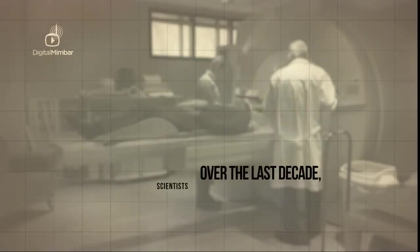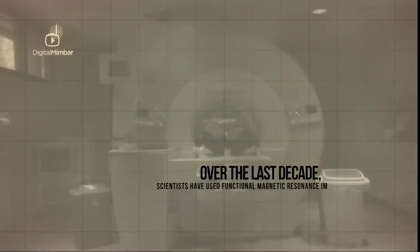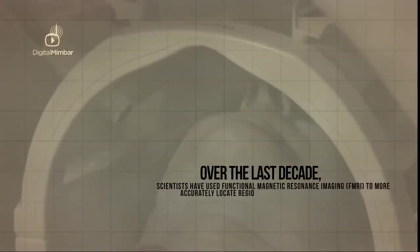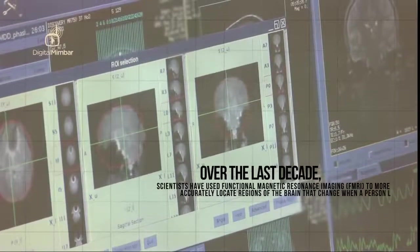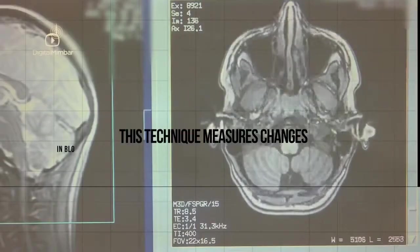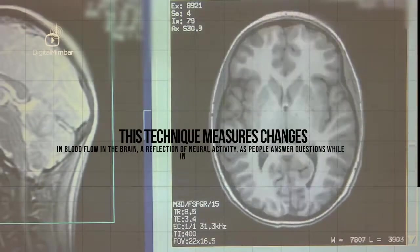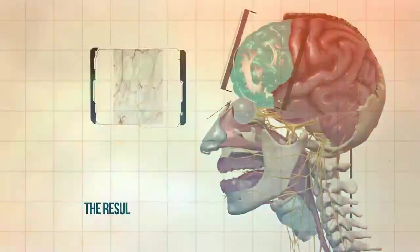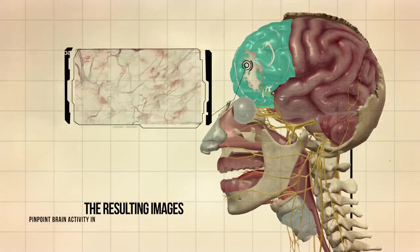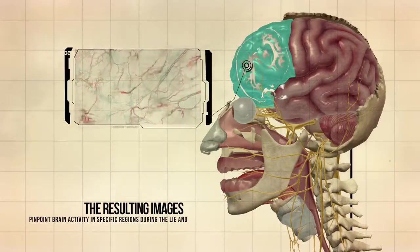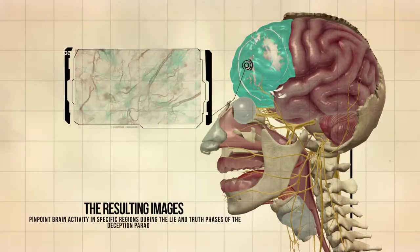Over the last decade scientists have used functional magnetic resonance imaging, fMRI, to more accurately locate regions of the brain that change when a person lies. This technique measures changes in blood flow in the brain, a reflection of neural activity, while people answer questions inside a scanner. The resulting images pinpoint brain activity in specific regions during the lie and truth phases of deception paradigms.